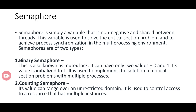Semaphores are of two types: binary semaphore and counting semaphore. A binary semaphore can have only two values — 0 and 1 — and its initialization value is 1. In a counting semaphore, the value can range over an unrestricted domain and is used to control access to a resource that has multiple instances.